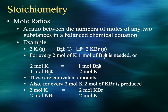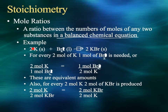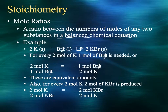The mole ratios deal with the coefficients in front of our substances — it's the ratio between the numbers of moles of any two substances in a balanced chemical equation. Down here, we've got solid potassium metal reacting with liquid bromine to produce potassium bromide, KBr. For every two moles of potassium you have, you need one mole of bromine for this reaction to occur. They occur in a specific ratio.